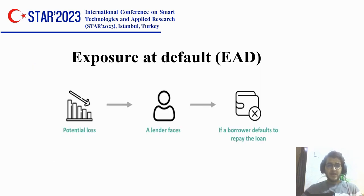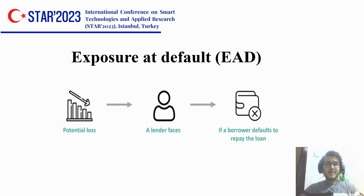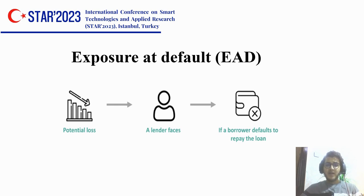Exposure at default (EAD) is a financial measure that assesses a creditor's total exposure to a borrower at the time of default. It represents the maximum amount potentially at stake in the event of default by the borrower, and includes the total amount of debt not yet repaid, guarantees, unused credit lines, and other financial commitments.